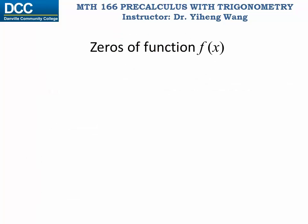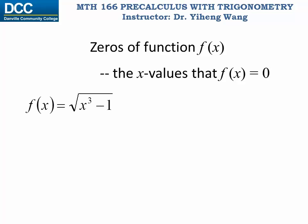The zeros of a function are defined as the independent variable values — in this case, x values — that will make this function equal to zero. So the procedure to determine the zeros of the function is quite simple. For example, for this function, to find its zeros, we simply set it equal to zero and then solve the equation for x. Therefore, x to the third power minus one equals zero, and x equals one. And that is the zero for this function.